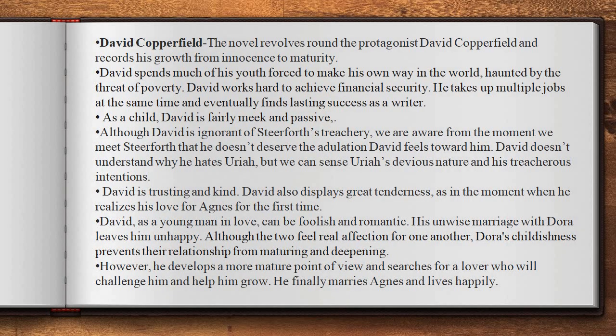The novel revolves around the protagonist, David Copperfield, and records his growth from innocence to maturity. David spends much of his youth forced to make his own way in the world, haunted by the threat of poverty. David works hard to achieve financial security. He takes up multiple jobs at the same time and eventually finds lasting success as a writer. As a child, David is fairly meek and passive, but the experiences he goes through force him to develop a more mature, active, and independent personality.